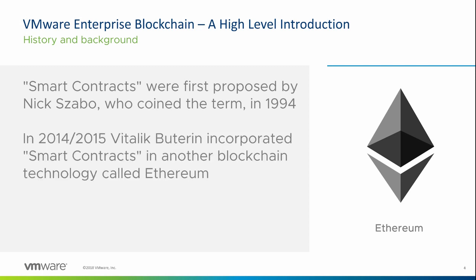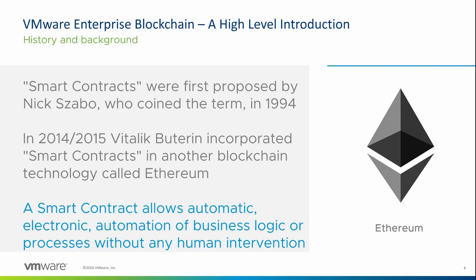And in 2014-2015, Vitalik Buterin incorporated these smart contracts into another blockchain technology called Ethereum. This smart contract allows automatic electronic automation of business logic or processes without any human intervention.